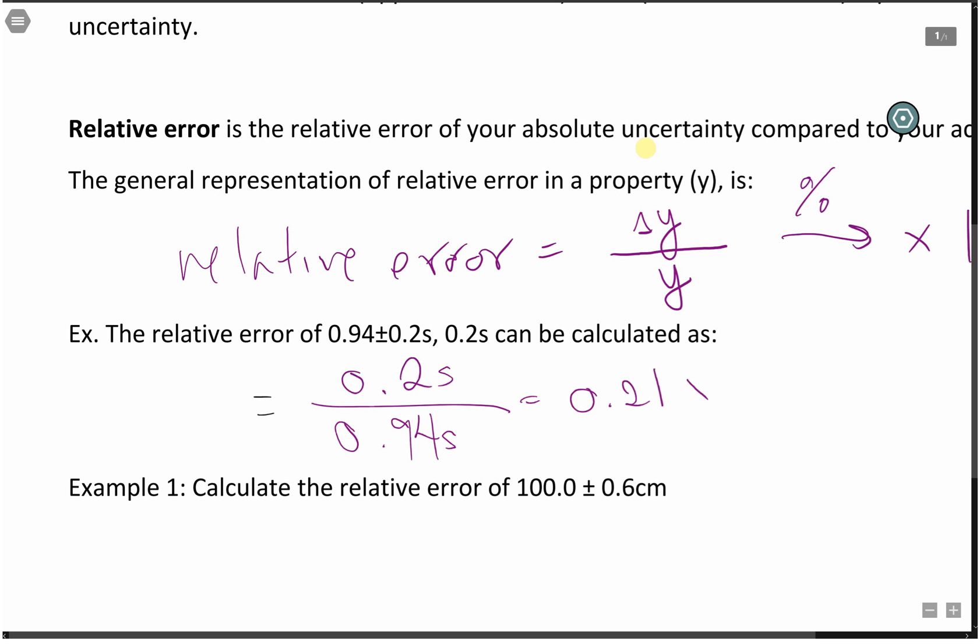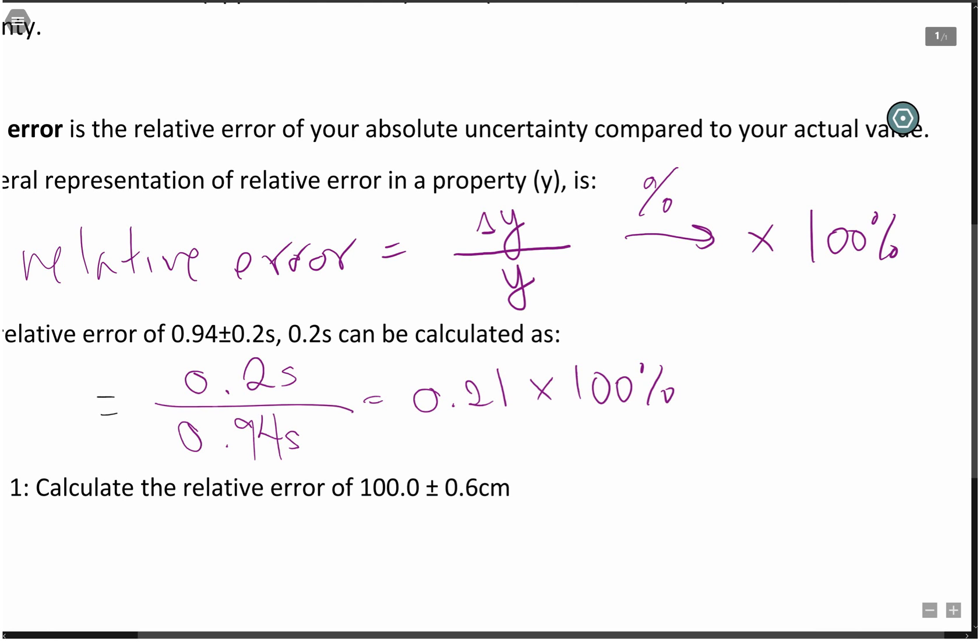And if you want to represent that as a percentage, you can. And this gives us 21%. In actuality, there were more significant digits, but because of our original value, we're just going to leave it as two significant digits.